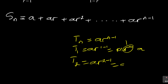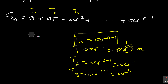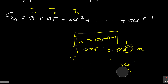Then t2 = ar^(2-1) = ar¹ = ar. For t3 similarly, t3 = ar^(3-1) = ar². And the last term is ar^(n-1). I hope you appreciate where these terms are coming from.